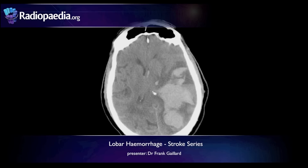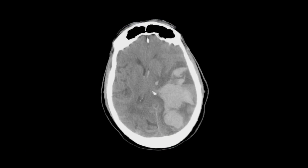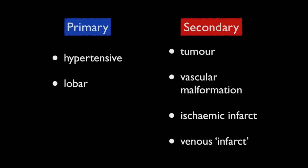Hello, this is Frank Gaylord from Radiopaedia.org, and today we will be looking at lobar hemorrhages. As we saw in our previous video on hypertensive hemorrhages, intracranial hemorrhages are typically divided into primary and secondary, according to whether or not there is an underlying lesion. Primary hemorrhages are further subdivided into hypertensive and lobar hemorrhages, although these two have underlying specific pathologies.